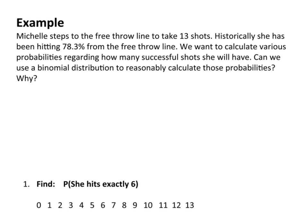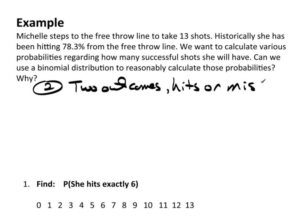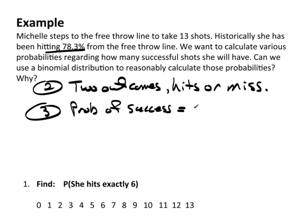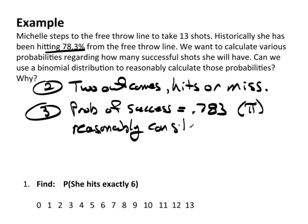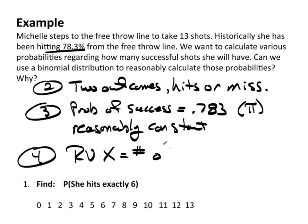The second assumption is that there are two possible outcomes — hit or miss. Next, the probability of success equals 0.783 historically, so that's what we'll use. This is pi, and it is reasonably constant. There's no reason to suspect that every time she's shooting, the probability of success is changing. Finally, the random variable X equals the number of hits.